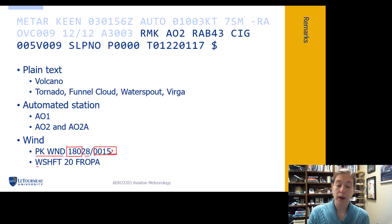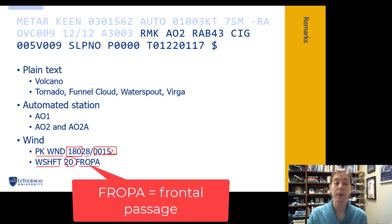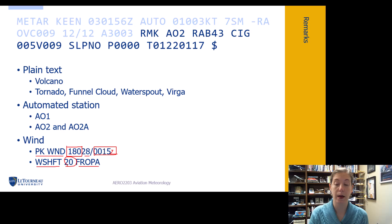Then sometimes you get this one, W shift, that's wind shift. We had a 20 degree wind shift and it was due to a frontal passage, FROPA. So frontal passed, a front passed by, and we had a wind shift after that happened.